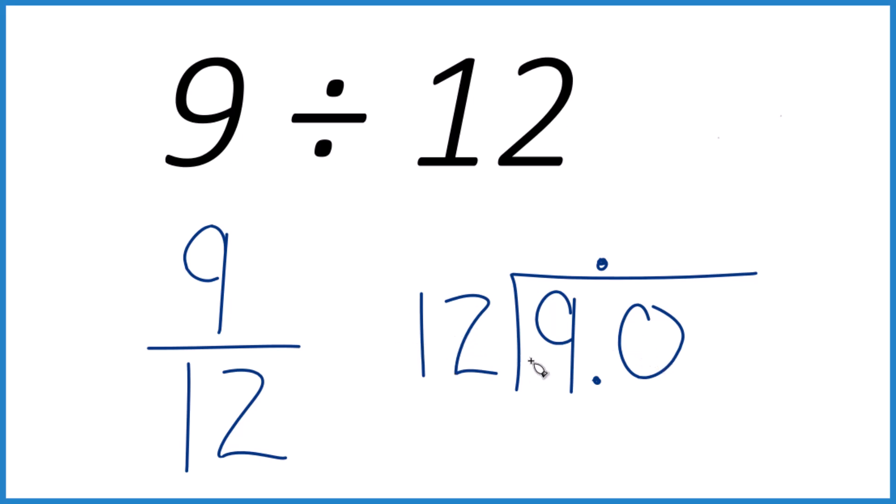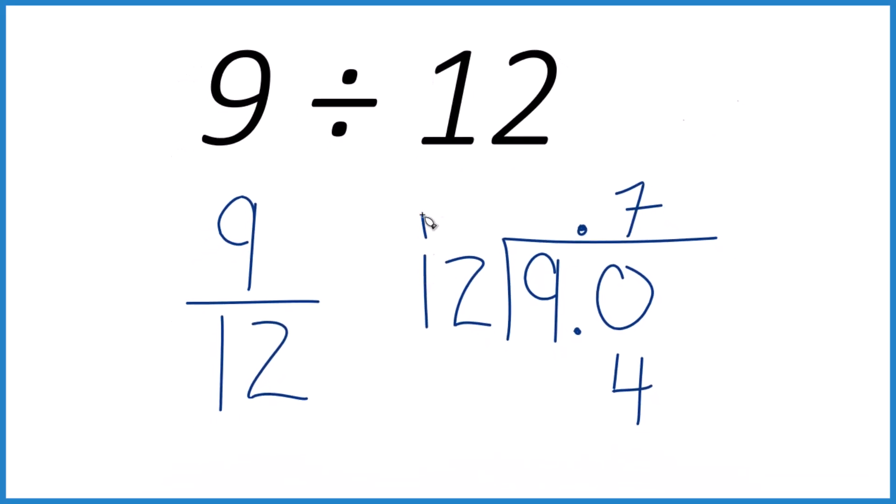5 times 12 is 60. Let's try 7. 7 times 2, 14. 7 times 1, 7 plus 1, 8.